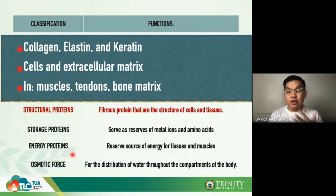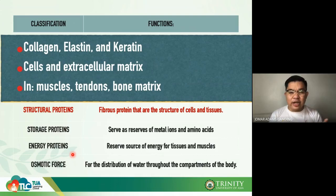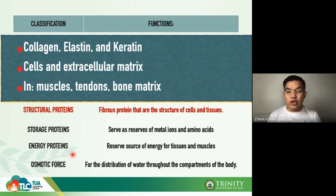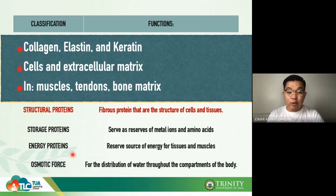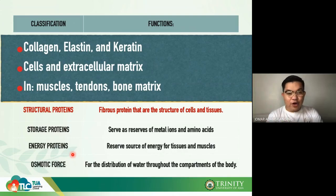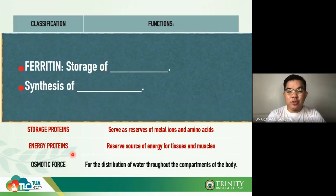We also have structural proteins such as collagen, elastin, keratin, and cellular and extracellular matrices. In muscles, we have tendons, and also in bone matrix. These structural proteins aid in the stability of our structures — our bones, inside our cells, and even our organs.